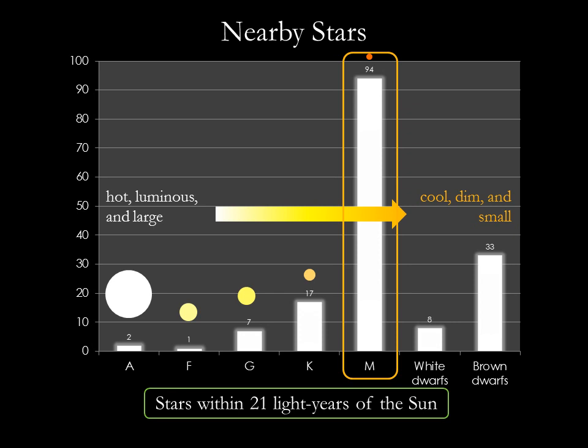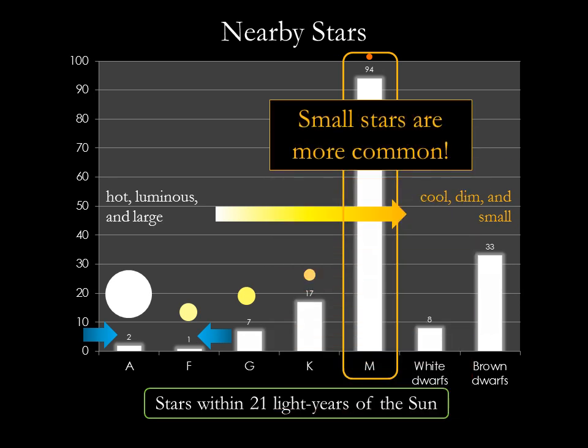In fact, only three of the nearby stars — the one F-type and the two A-types — are more luminous and more massive than the Sun. What is clear is that small stars are much more common in our neighborhood than large stars.